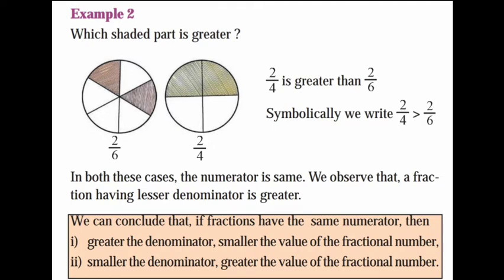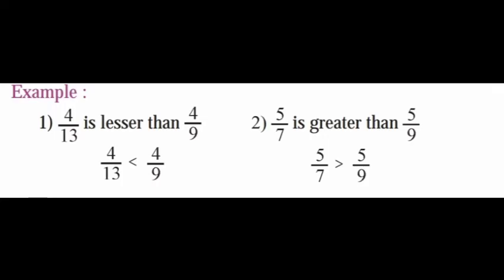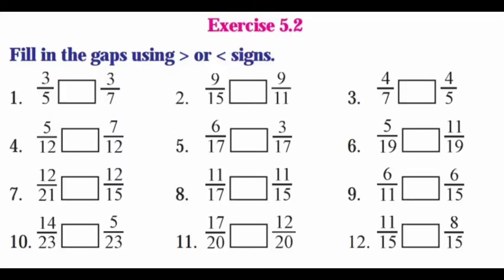When the numerator is the same, since denominator 7 is smaller than the other, 5 by 7 is greater. Exercise 5.2 — fill in the gaps using greater than or less than signs. In the first row, all numerators are the same, so: 3 by 5 is greater than 3 by 7. 9 by 11 is greater. 4 by 5 is greater than 4 by 7.